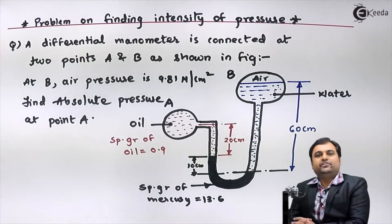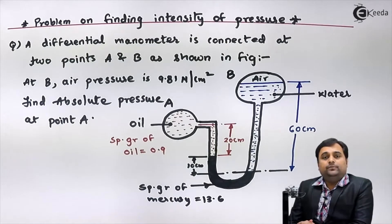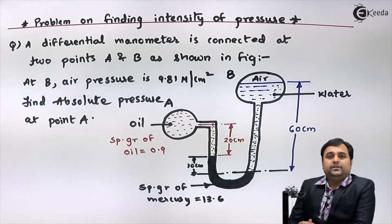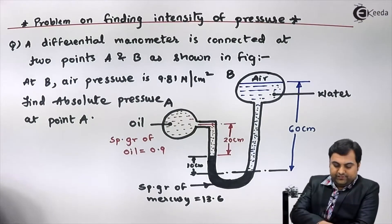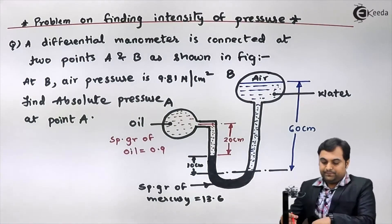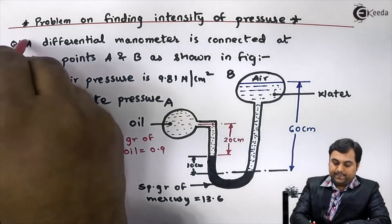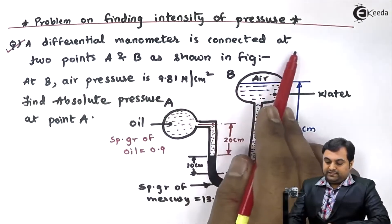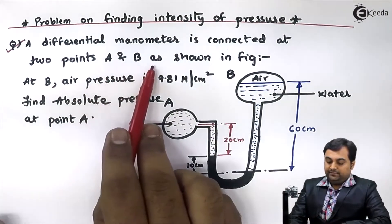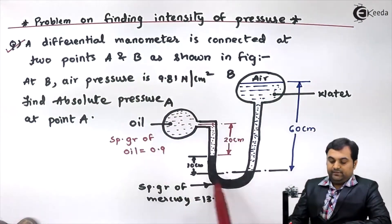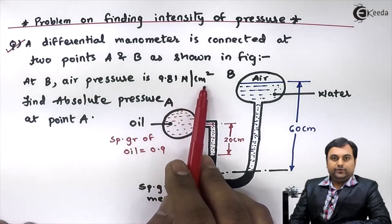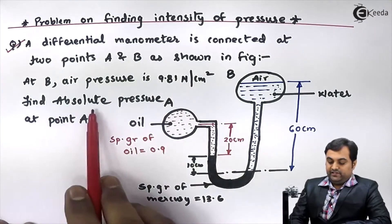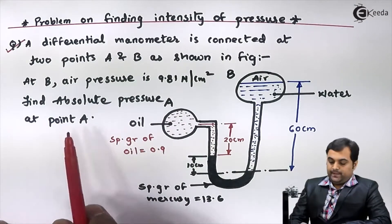Hello friends. In this video we will see a problem on how to calculate the pressure at a point in a pipeline by using a differential manometer. The problem states: a differential manometer is connected at two points A and B as shown in the figure. At point B the air pressure is 9.81 Newton per centimeter square. Find the absolute pressure at point A.